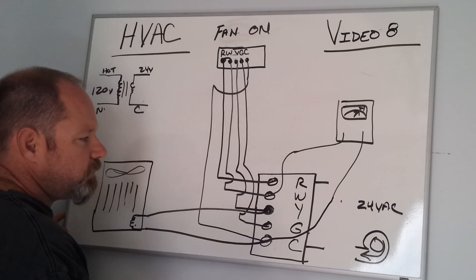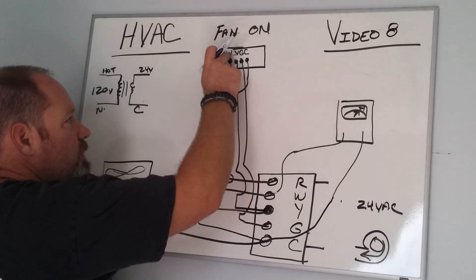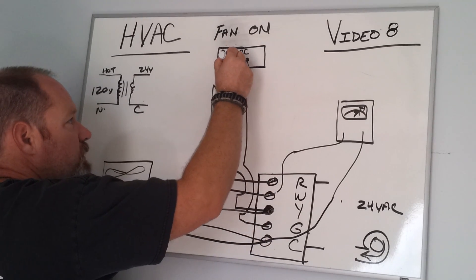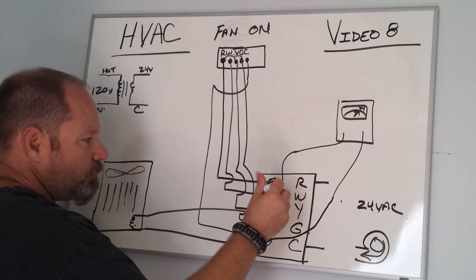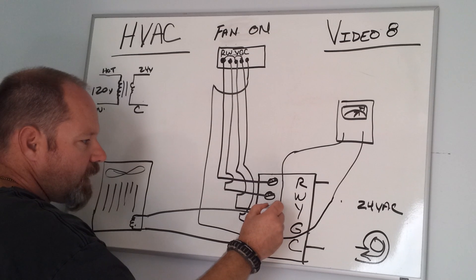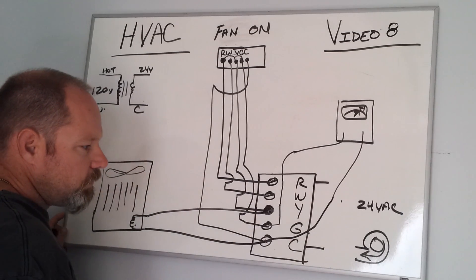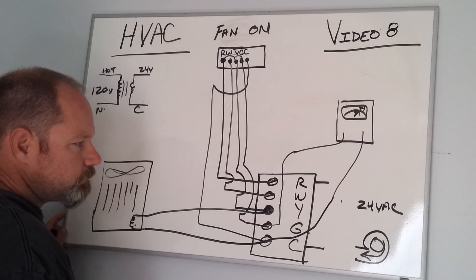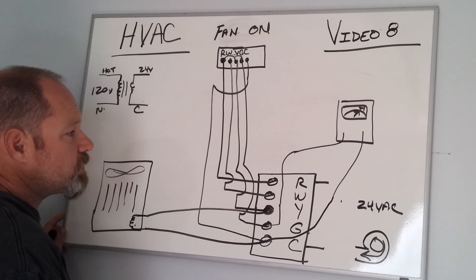If your thermostat is set and supposed to be sending a signal to Y and G, and you put your terminal here, you should have power on Y or G—both. Hopefully that helps. That's pretty much how a thermostat is wired into a system.